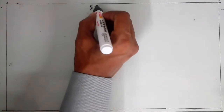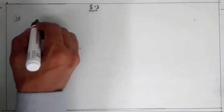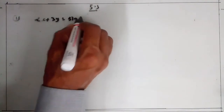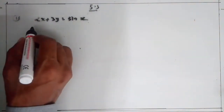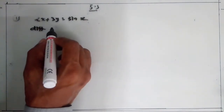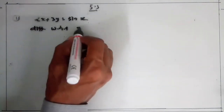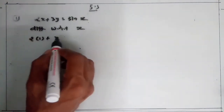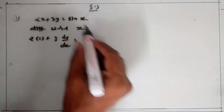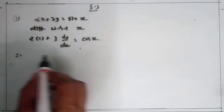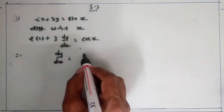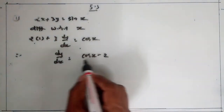Now we solve some questions from Exercise 5.3. Question number 1: Find dy/dx for the given implicit function. 2x plus 3y equals sin x. Differentiate each term with respect to x. The derivative of 2x is 2, plus 3 times dy/dx equals cos x. Rearranging and dividing by 3, we get dy/dx equals (cos x minus 2) upon 3.